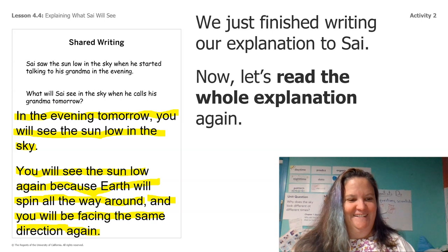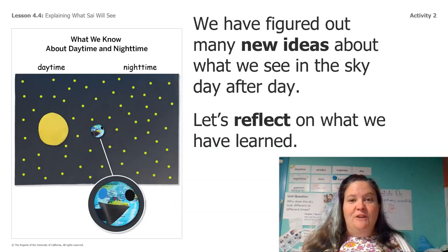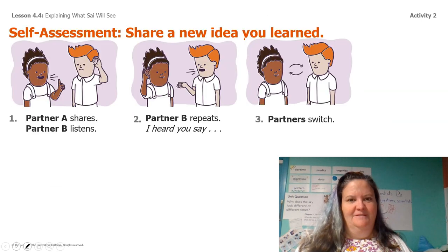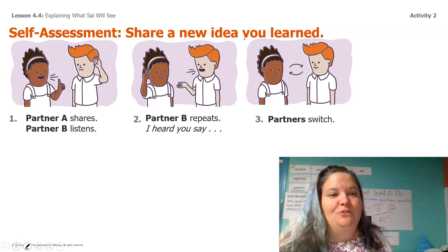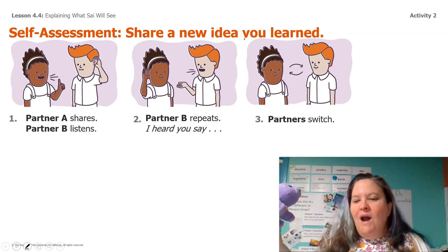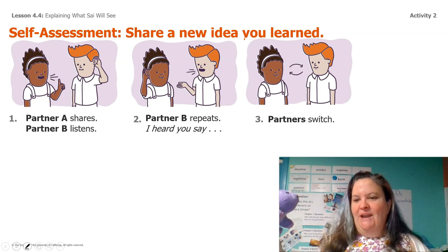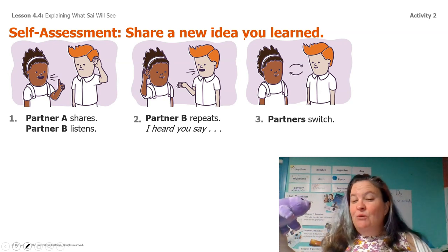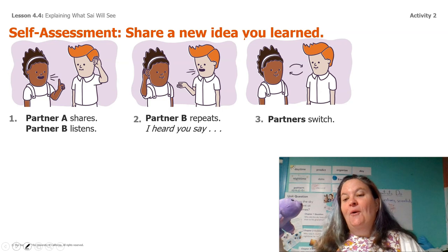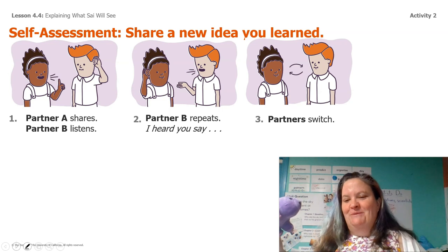Nice work! We've figured out so many new ideas about what we see in the sky day after day. Let's reflect quickly on what we've learned. Grab your partner and tell them at least one idea you've learned. Tell Lavender one idea you learned, she tells you what she heard, then she shares one idea she learned, and you tell her what you heard. Go ahead — talk to your partner about one thing you've learned from this unit.